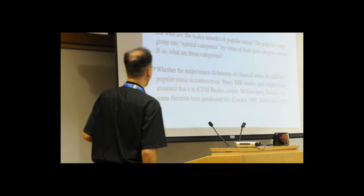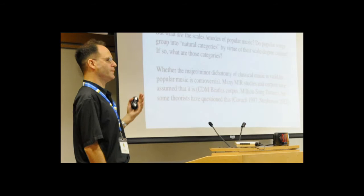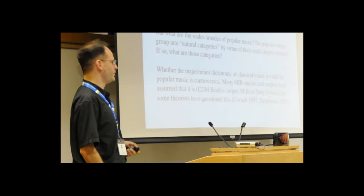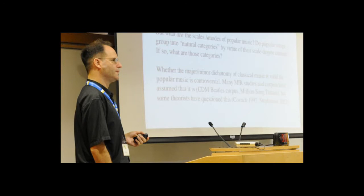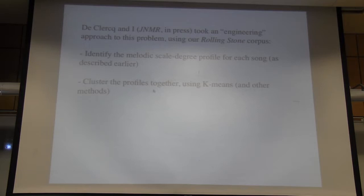This raises the issue: what are the scales or modes of popular music? Do pop songs group into natural categories by their scale degree content? The validity of the major-minor distinction for pop music is controversial. A lot of MIR studies and corpora assume that it is valid and label songs as major versus minor. But some theorists have questioned this and suggested that the major-minor dichotomy is not valid for pop music. Trevor and I started out with an engineering approach to this problem, again using the Rolling Stone corpus — identifying the melodic scale degree profile for each song and clustering those profiles.